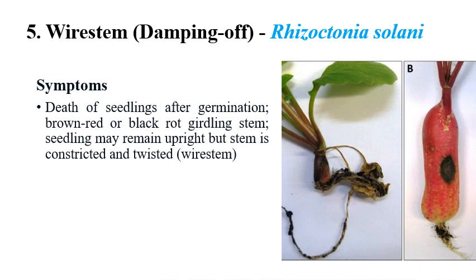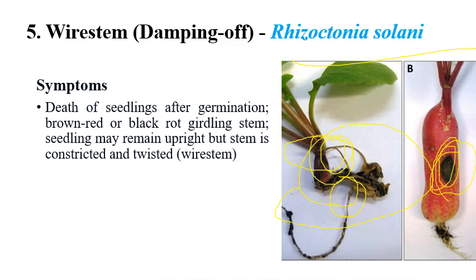Wire stem or damping off is caused by Rhizoctonia solani. The name itself indicates the symptom — the stem or roots look like a wire, with a girdling or twisted appearance. The wire-like twisted appearance can be seen on roots, and initially some portion of the stem also becomes very lean and constricted. Black or dark color spots can also be seen on tubers, caused by Rhizoctonia solani.